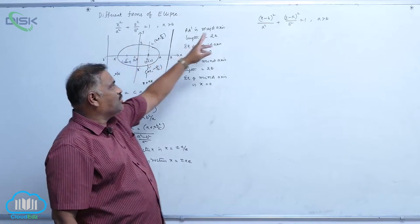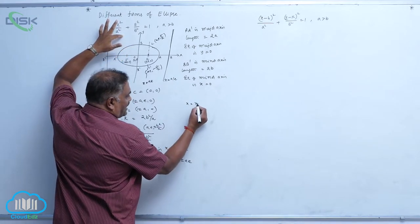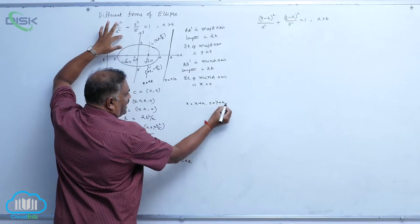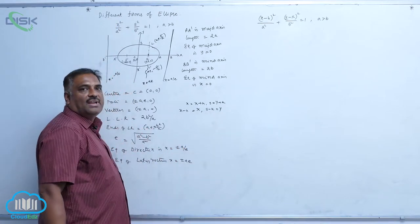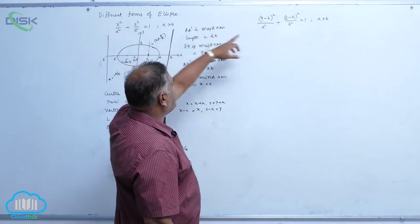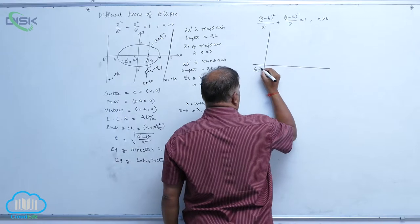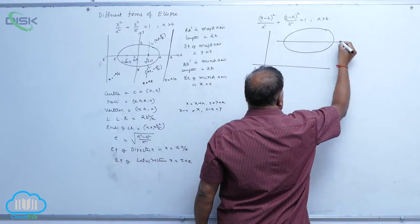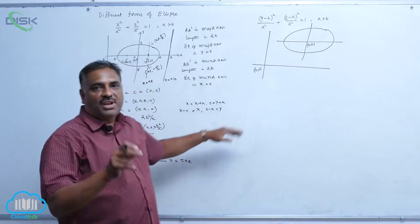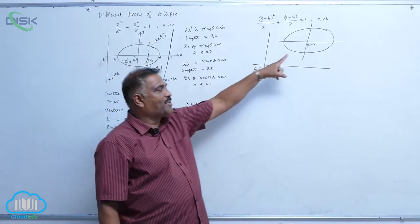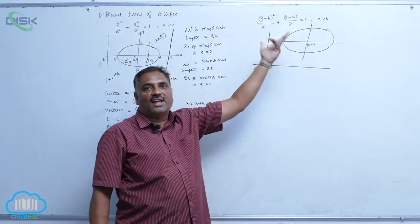Suppose the center is shifted to some point (h, k). Then the equation changes: X = x − h, Y = y − k. Substituting capital X and Y into the standard equation reduces it to the shifted form. This is a translation — shifting the origin from (0, 0) to (h, k).